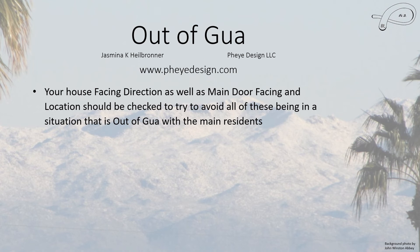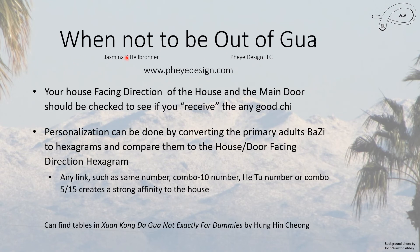Now there are times when you do not want to be Out-of-Gua. If the facing direction of your house or your main door — I check it to see whether or not you receive good Chi. Because if you are Out-of-Gua with your house's facing direction and your house's main door facing direction, then you're not going to receive the good Chi. And so we can check to see that you are not Out-of-Gua.